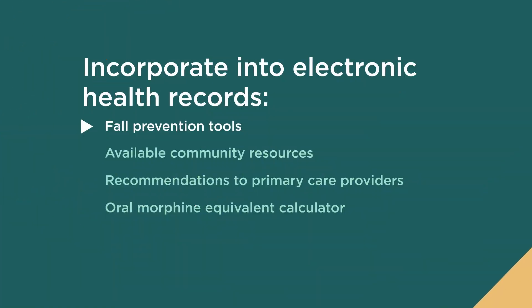The University of California San Francisco integrated a fall prevention program by adapting their electronic health record to include a prompt to screen all older adults for fall risk. Actions that helped integrate fall prevention into inpatient clinical practice include incorporating or customizing tools within the electronic health record to assess and identify risk factors for falls.